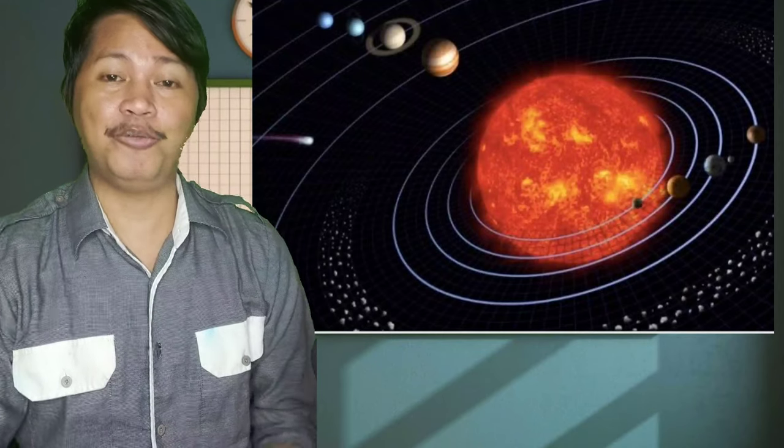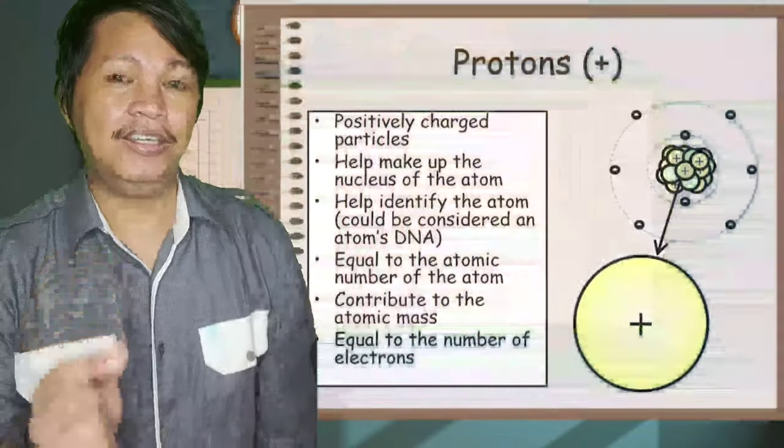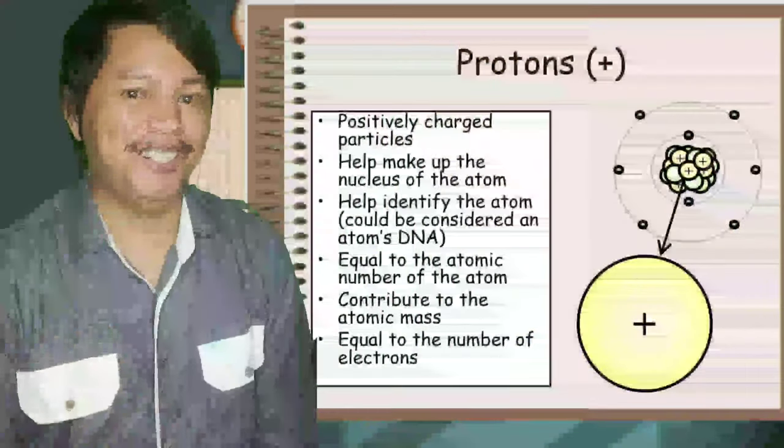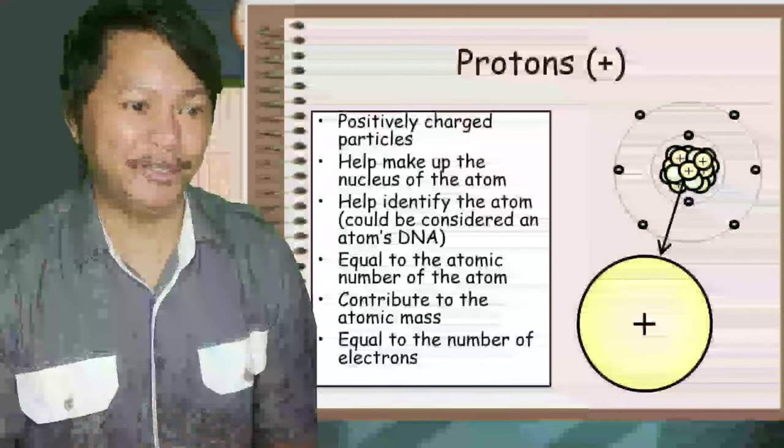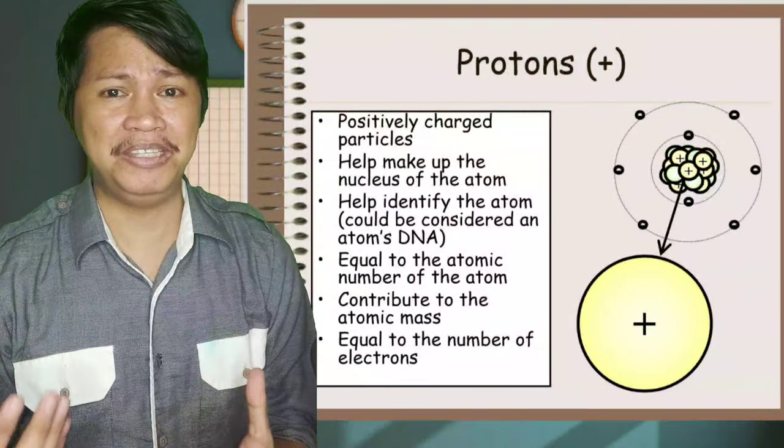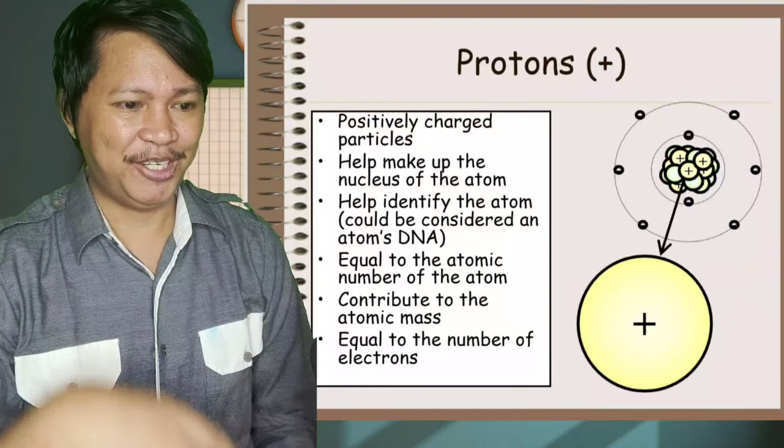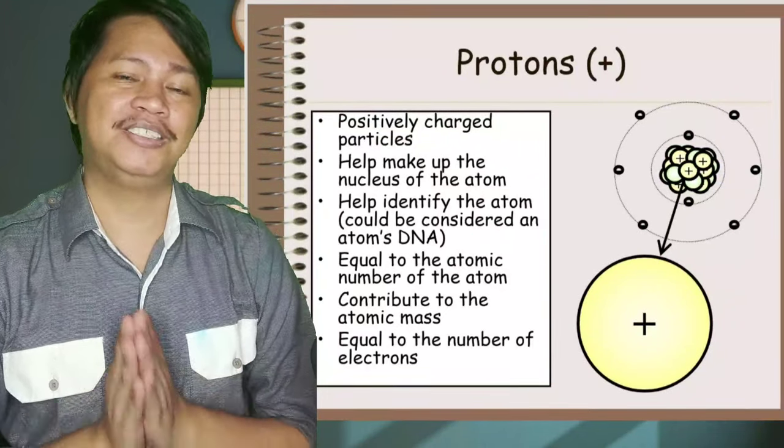So going back to discussion, what particles are atoms made of? I mentioned a while ago that we have proton, electron, and neutron. So proton, let me discuss. It is a positively charged particle. It helps make up the nucleus of an atom and it's equal to the atomic number. If the atom is neutral, it's equal to the number of electrons.